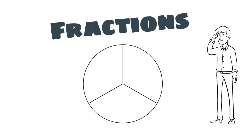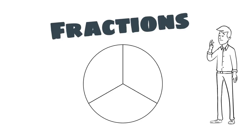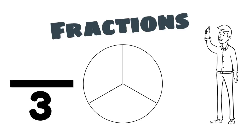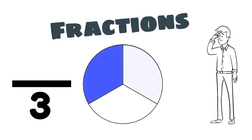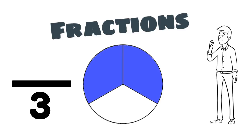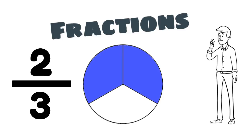This circle has been divided into three equal parts. Two of the equal parts are colored, so our numerator is two. Two-thirds of the circle is colored.